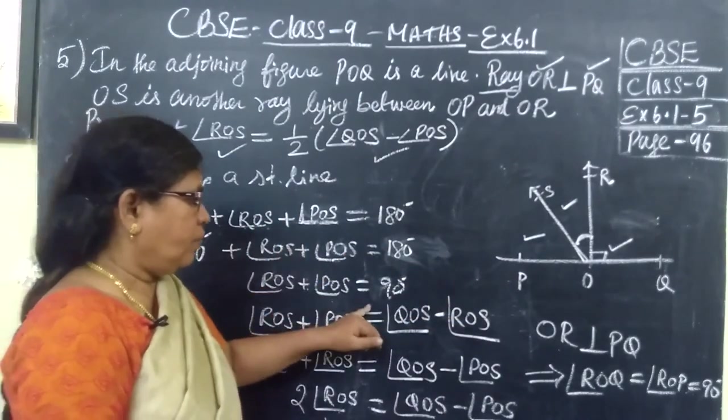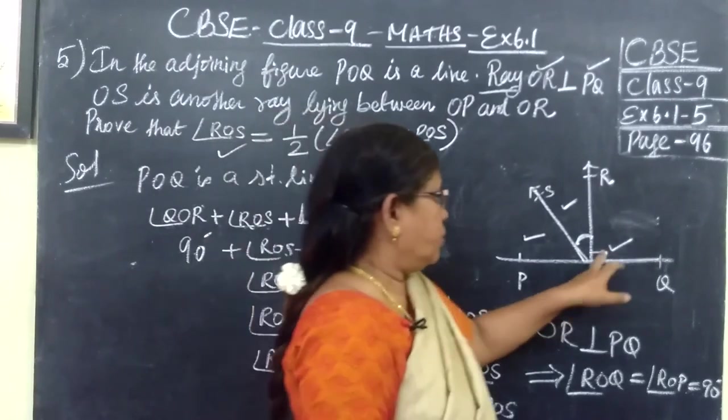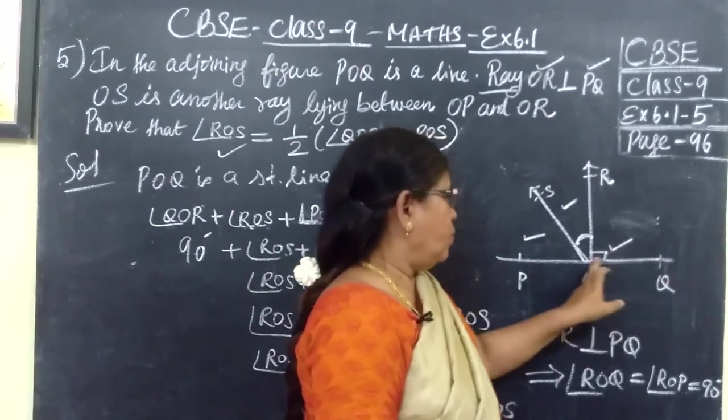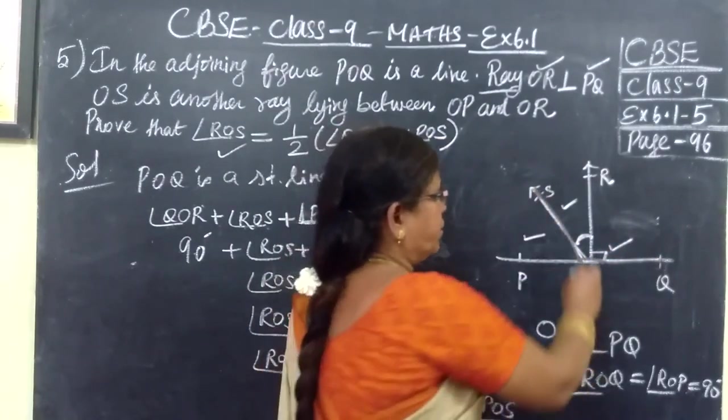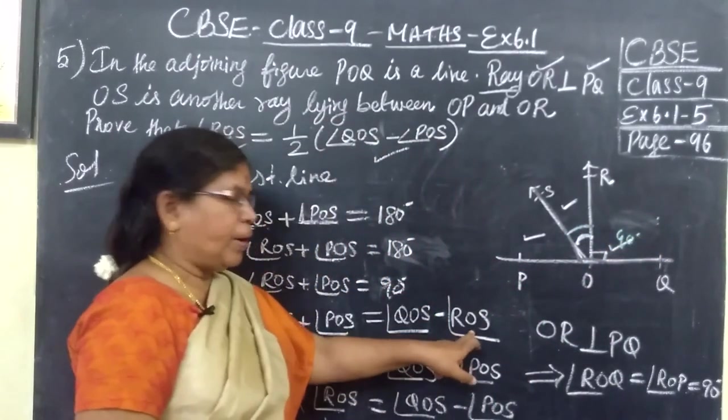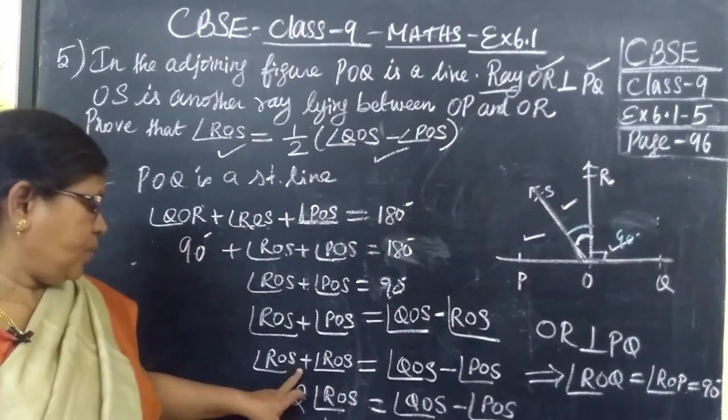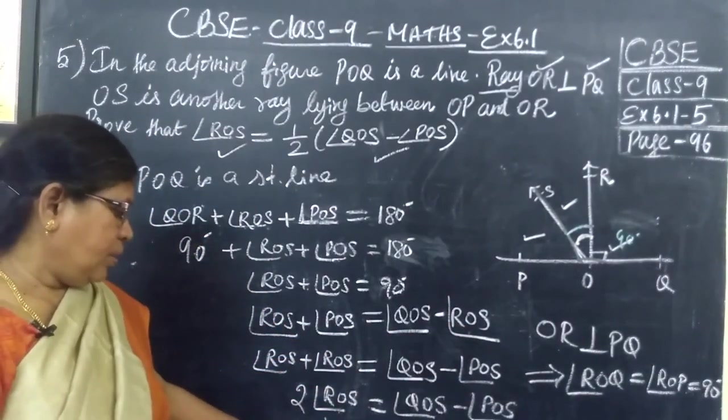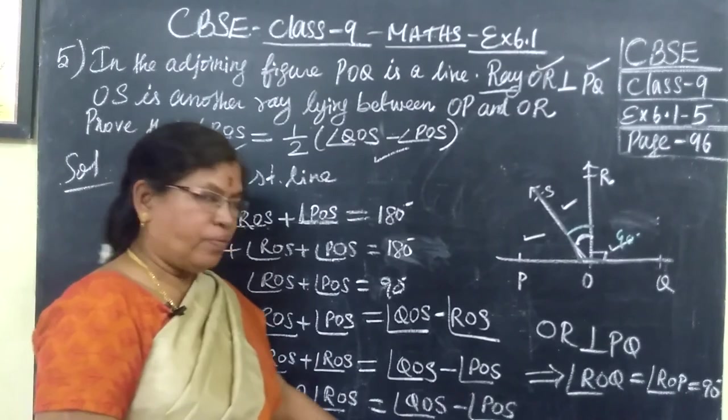This is the first one. Then for the second one, to get this 90 degrees, this whole angle minus this angle. So instead of 90 you are writing this one. Minus ROS, bring it to this side. So twice of this, therefore ROS equals half of the remaining.